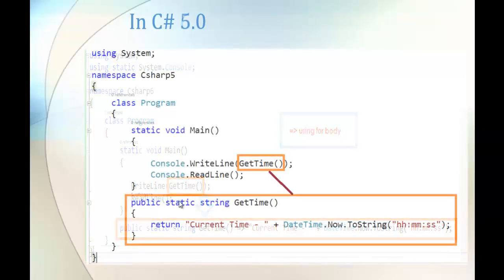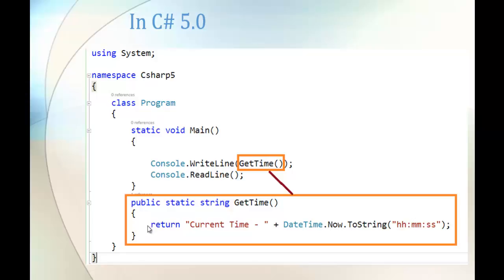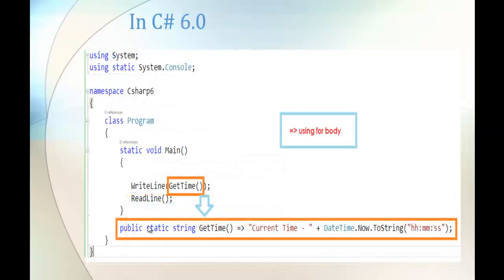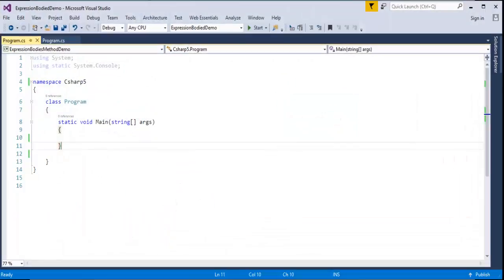Coming to C# version 6, the function definition is reduced. Instead of defining logic within a statement block, we can use the goes-to operator — that is, the lambda expression. What we do is write: public static string getTime — no statement block, no curly braces — and then use the goes-to operator and write the logic directly. Very simple.